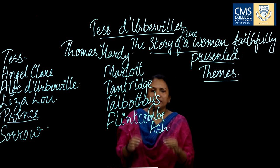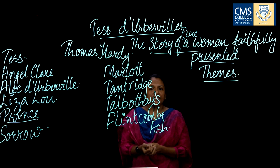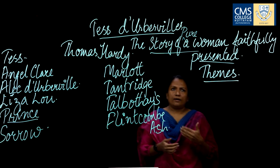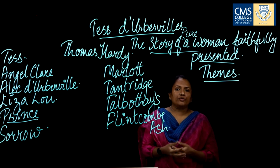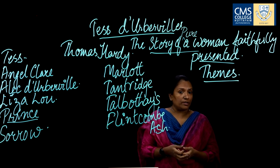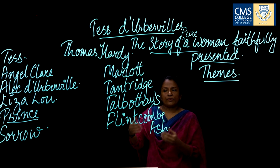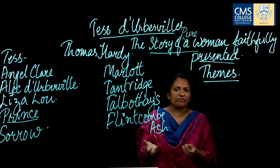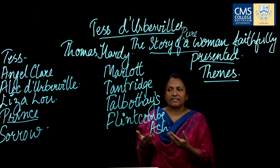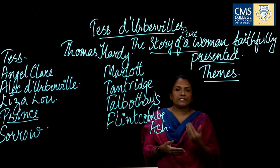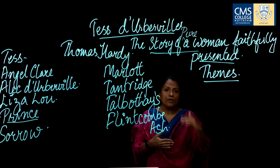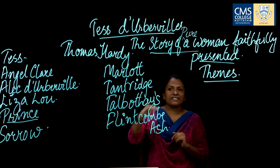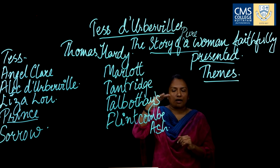Sorrow is a very significant name because from that point onwards we see Tess leading a life of sorrow, needing to be brave and have fortitude but often losing it. Sorrow has a very short life — dying in three to five months. The whole novel is divided into many phases — six phases — which are stages in Tess's life.